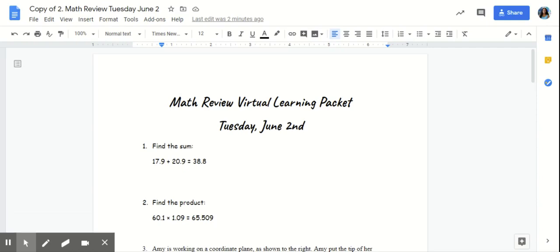So for problem number one, you're going to find the sum of 17 and 9 tenths plus 20 and 9 tenths. If you stacked your numbers correctly and you did your addition correctly, your answer should be 38 and 8 tenths.